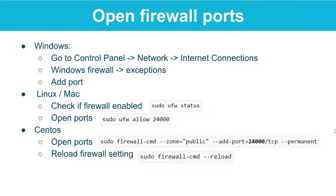For example, if you're using Windows, you go to the Control Panel, click Network, and then click Internet Connections. Here you're going to find and open the Windows Firewall.